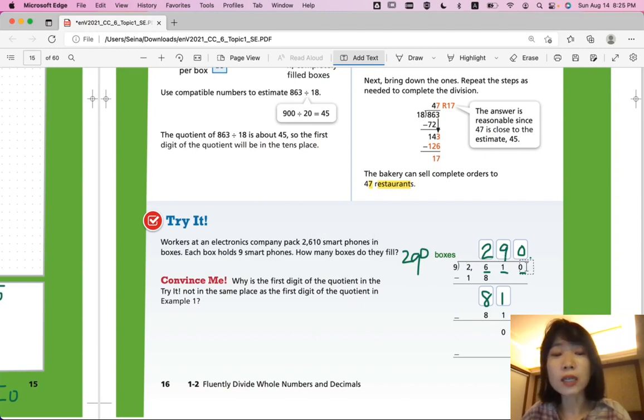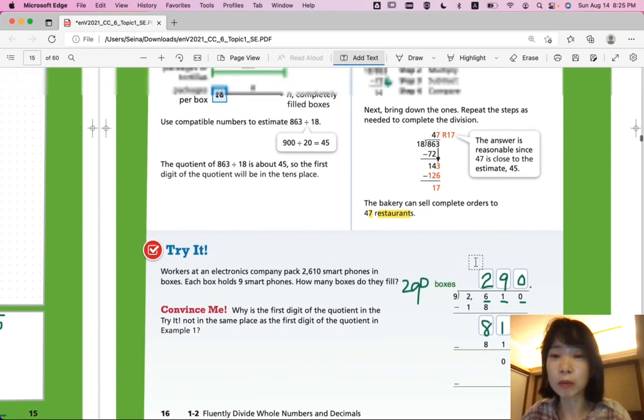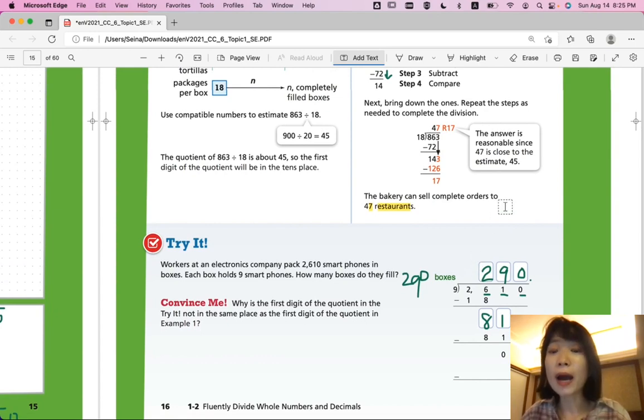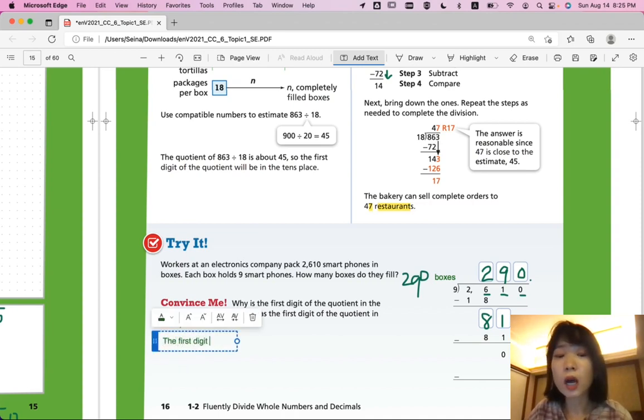Convince me. Why is the first digit of the quotient in the try it not the same place as the first digit of the quotient in example 1? Why is the first digit 2? Not the same place as the first digit in example 1, 4. Why? Which place is 2 in? It's the hundredths place. Which place is 4 in example 1 in? It's on the tenths place. So, what can we say? The first digit of the quotient in the try it represents 2 hundredths.